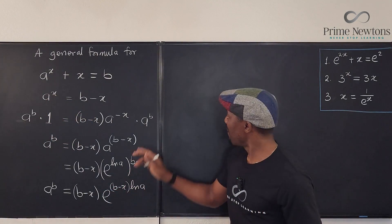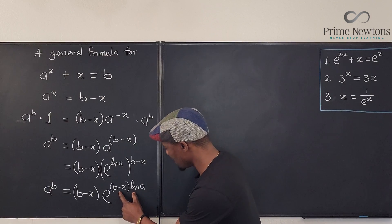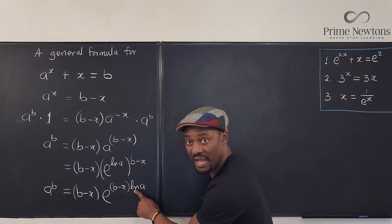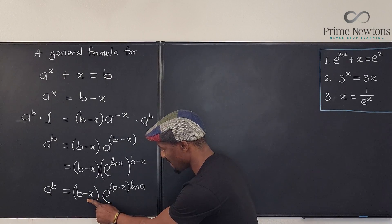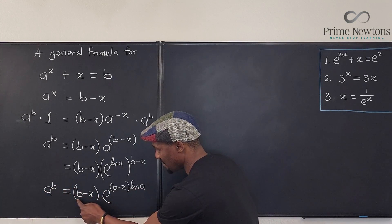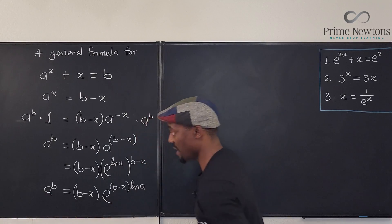All we need to perfect this is to make sure what is here is what is here. But the only difference is this is being multiplied by ln of a. This doesn't have ln of a. So we just need to multiply this by ln of a, which means we have to multiply this two by ln of a.